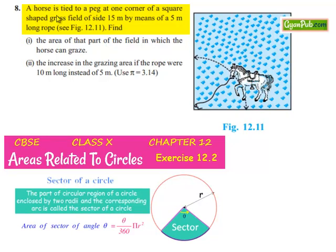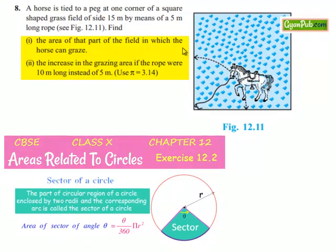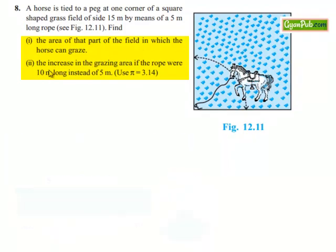Moving on to the 8th question: a horse is tied to a peg at one corner of a square-shaped grass field of side 15 meters, by means of a 5-meter-long rope. We need to find the area of the part of the field in which the horse can graze, and the increase in grazing area if the rope were 10 meters long instead of 5 meters.